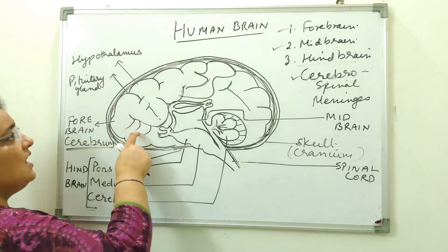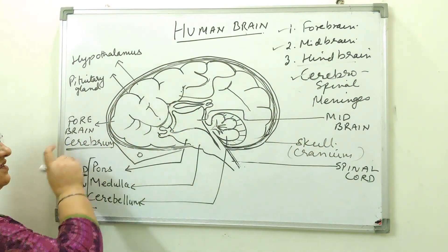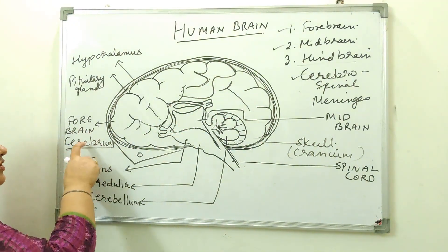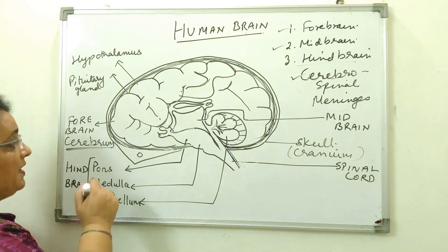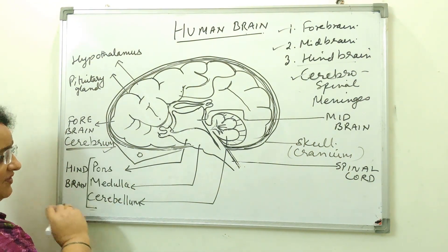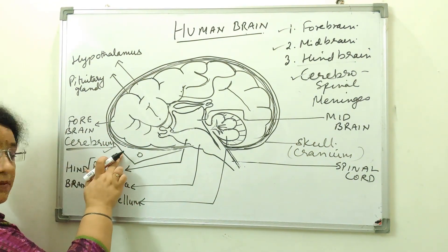And next comes the forebrain. Largest part of the brain is the forebrain. And it is also known as cerebrum. Note the difference. This is cerebrum. And this is cerebellum.